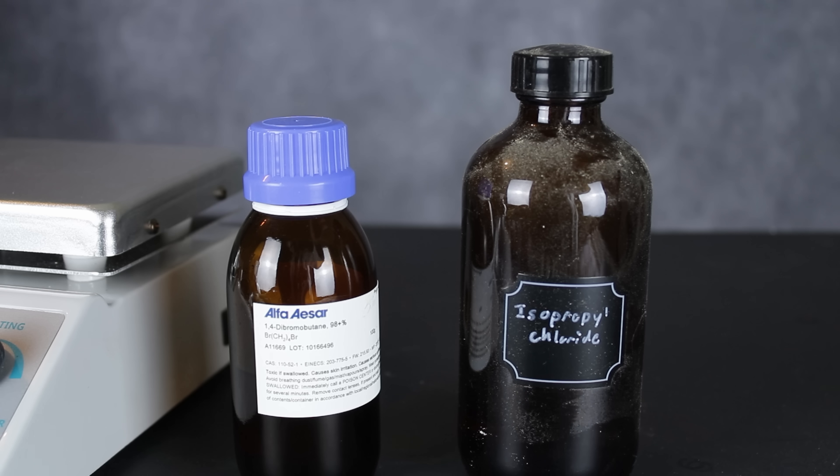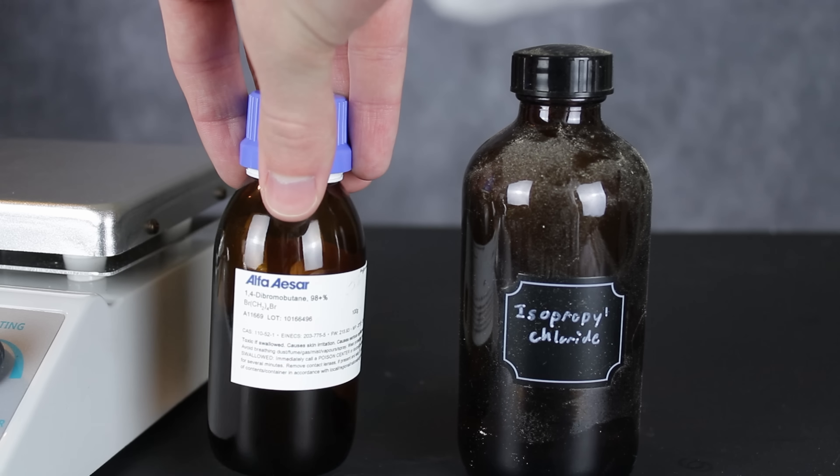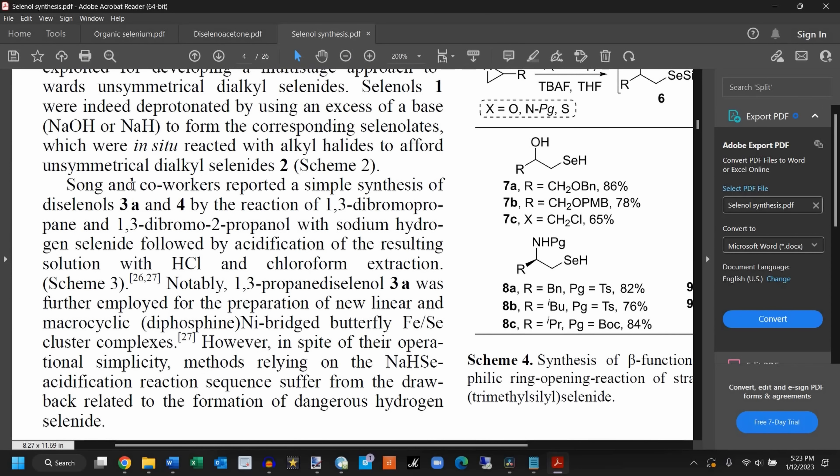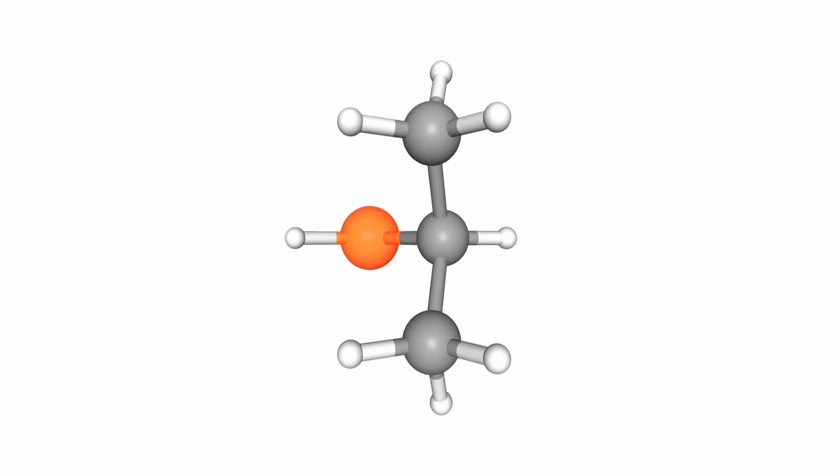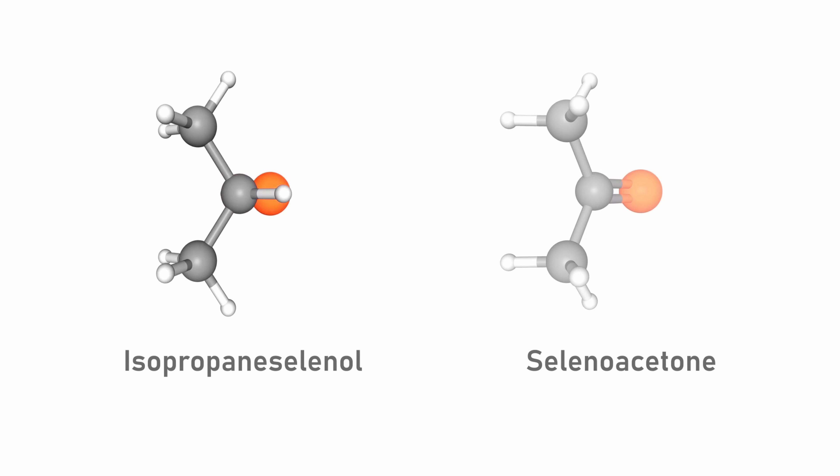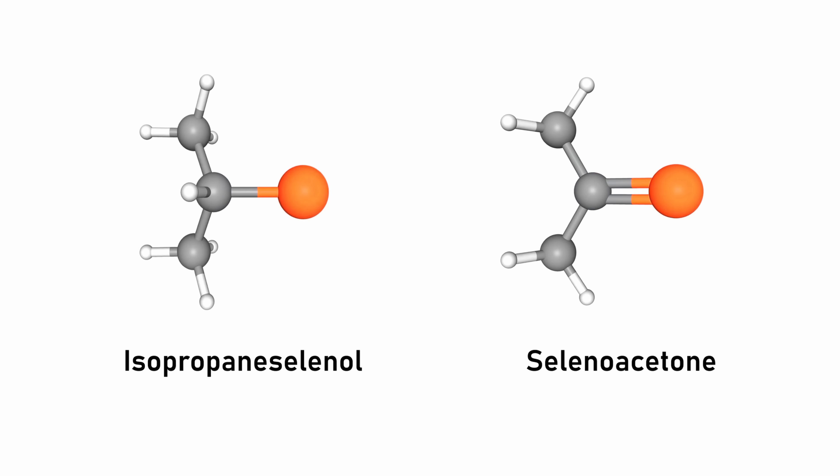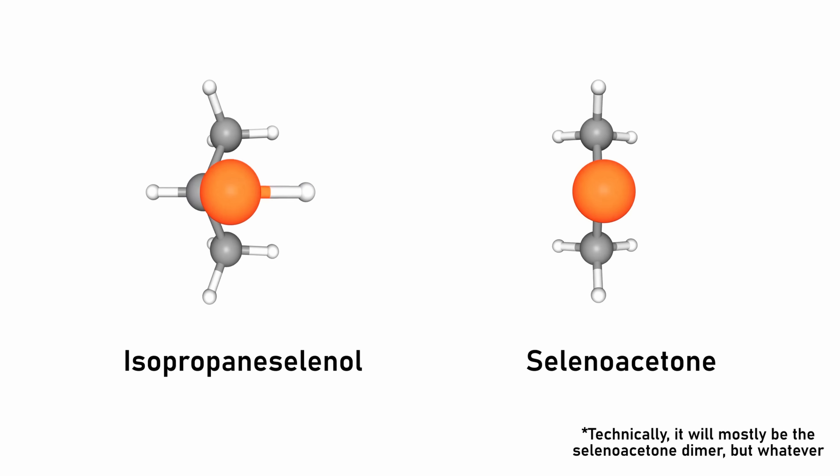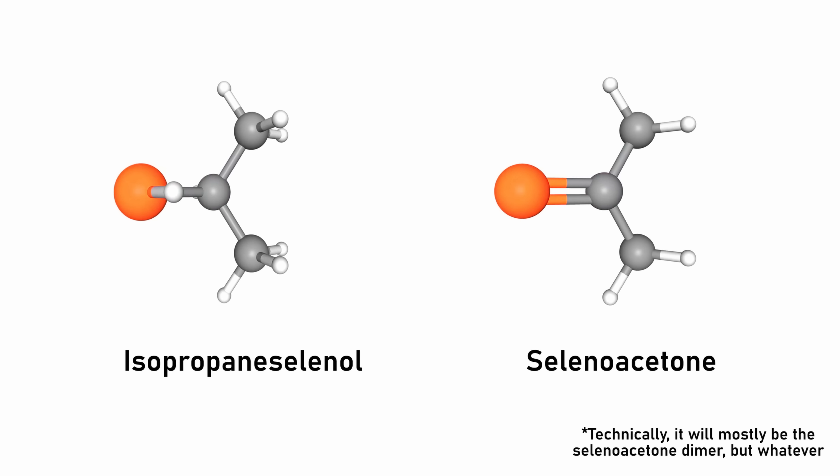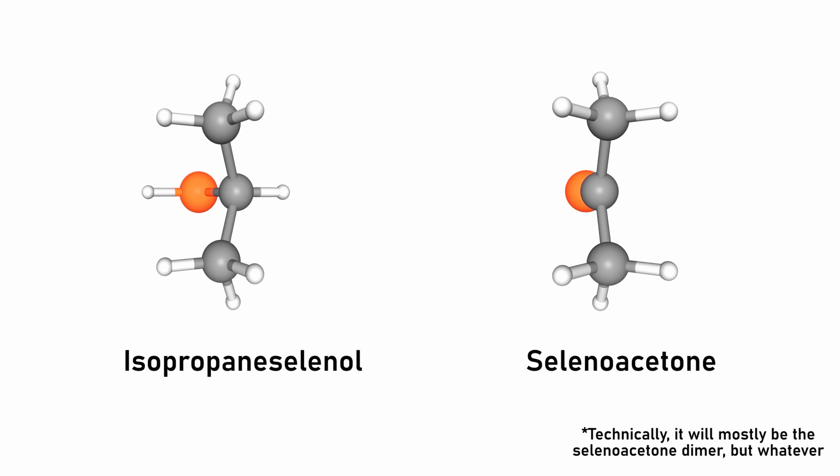In my case, I actually had two alkyl halides in mind that I wanted to try. 1,4-dibromobutane and isopropyl chloride. I chose the 1,4-dibromobutane because I had it on hand, and it was very similar to the 1,3-dibromopropane used in the paper. Besides, I figured it would be good to have a diselenol to compare the ordinary selenol and selenol ketone with. And with the isopropyl chloride, I figured the isopropane selenol formed by it would make for a good contrast to selenoacetone, since the end product would be almost identical on a molecular level, except for an additional hydrogen connected to the main selenium atom.